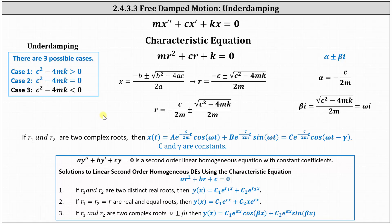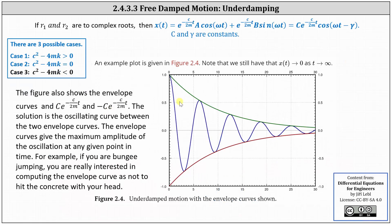Now let's look at a graph of underdamping. This graph shows underdamping with the envelope curves above and below. The underdamped motion is the curve in the middle. Notice x of t approaches zero as t approaches infinity.